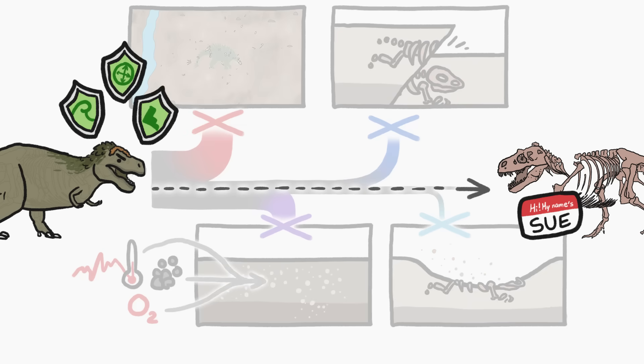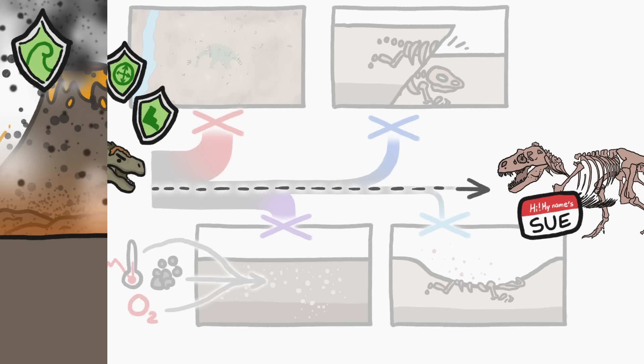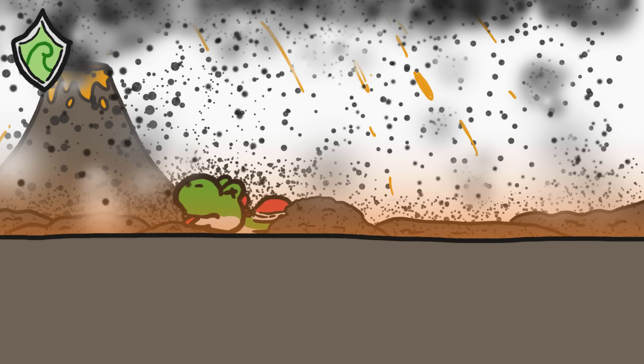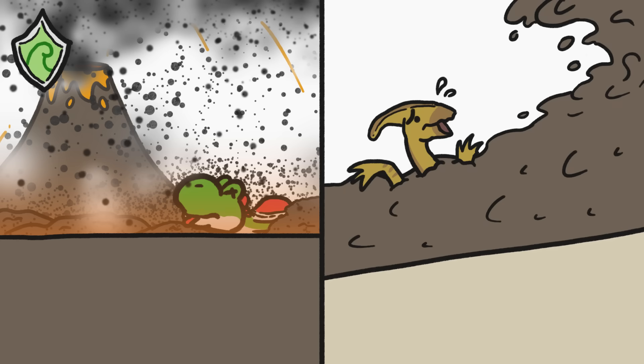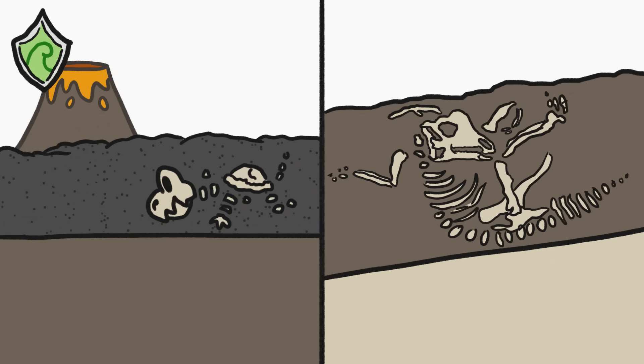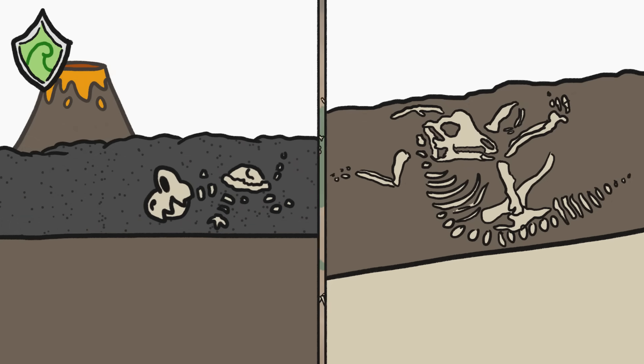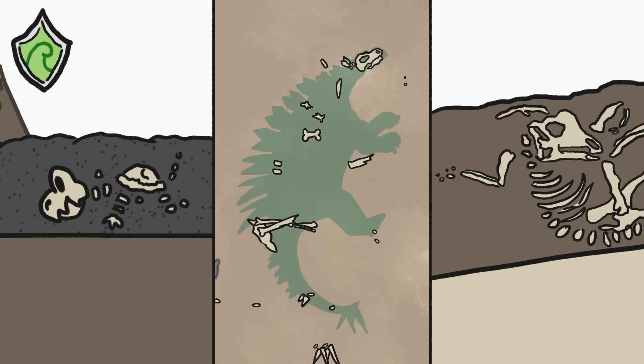But there are a few conditions that can protect a dinosaur's skeleton from being lost to time. Like when a dino was killed and buried at the same time, in, say, a volcanic eruption, or a torrent of mud that scientists call a debris flow. Because these skeletons got buried right away, they have a much better shot at staying intact than skeletons that just lay around for a while.